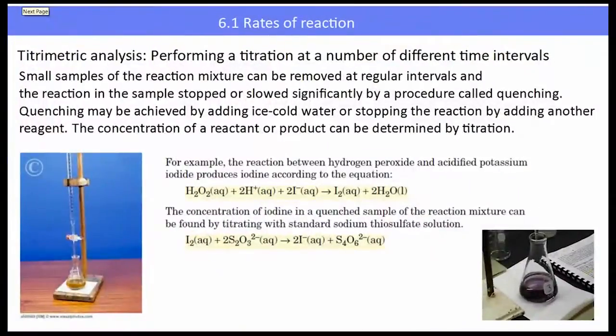Another technique to determine the rate of reaction might be to use a titration at a number of different time intervals. The way you would do this is to have your experiment going and then extract small samples of the reaction mixture, usually with a pipette—we would describe that as being an aliquot—at regular time intervals, and then to stop or slow the reaction so that we can determine how much is present. That process is called quenching, and quenching is usually achieved by adding ice cold water to slow down the reaction rate, or sometimes by adding other chemicals which completely inhibit the reaction. So we do our titration on our aliquot, and that allows us to determine the concentration of a reactant at certain parts of the experiment.